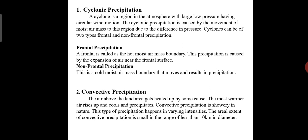This type of precipitation happens in varying intensities. The aerial extent of convective precipitation is small, in the range of less than 10 km in diameter.